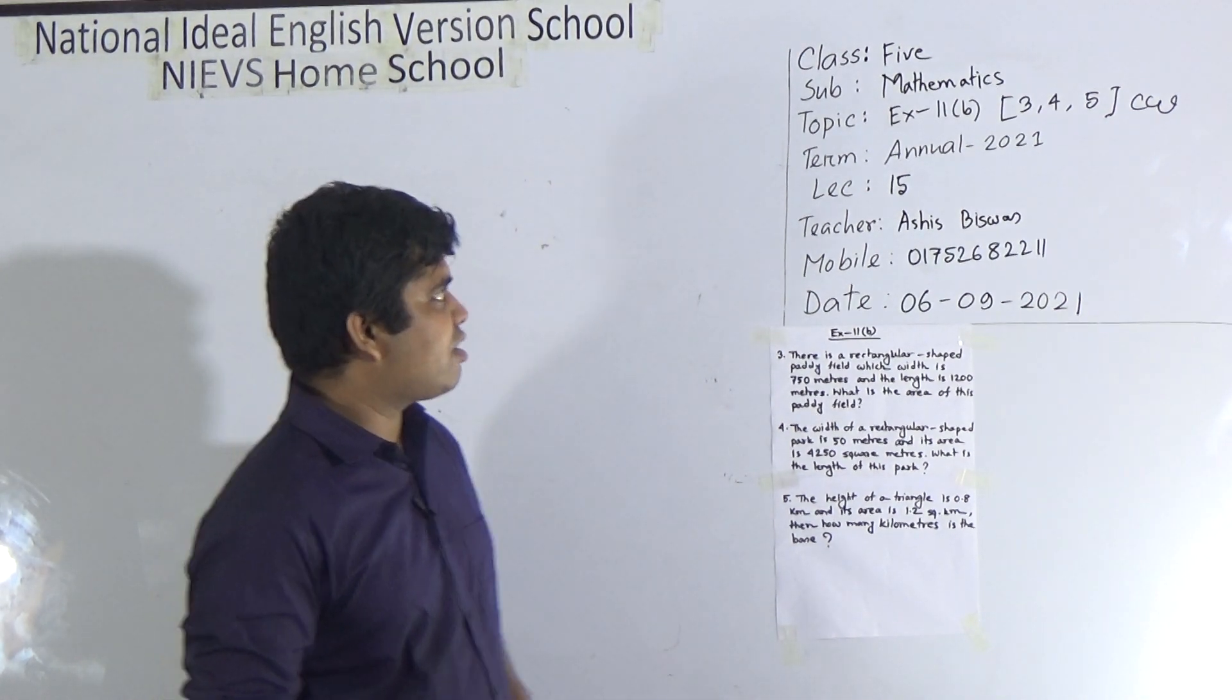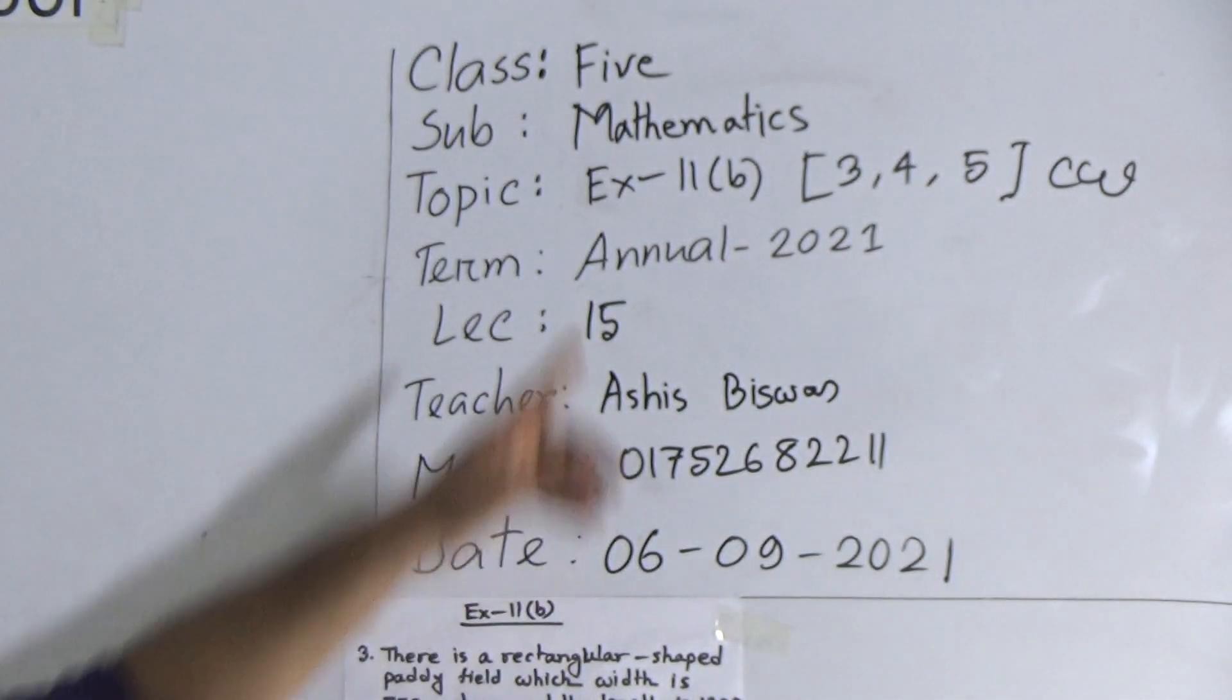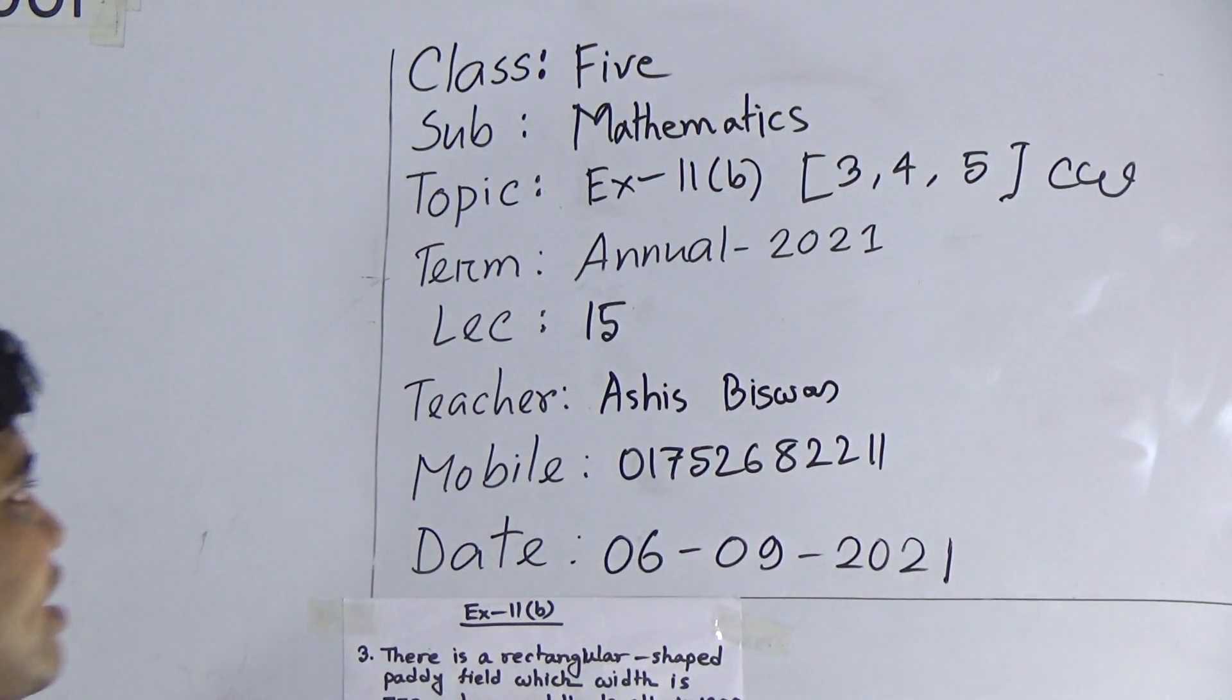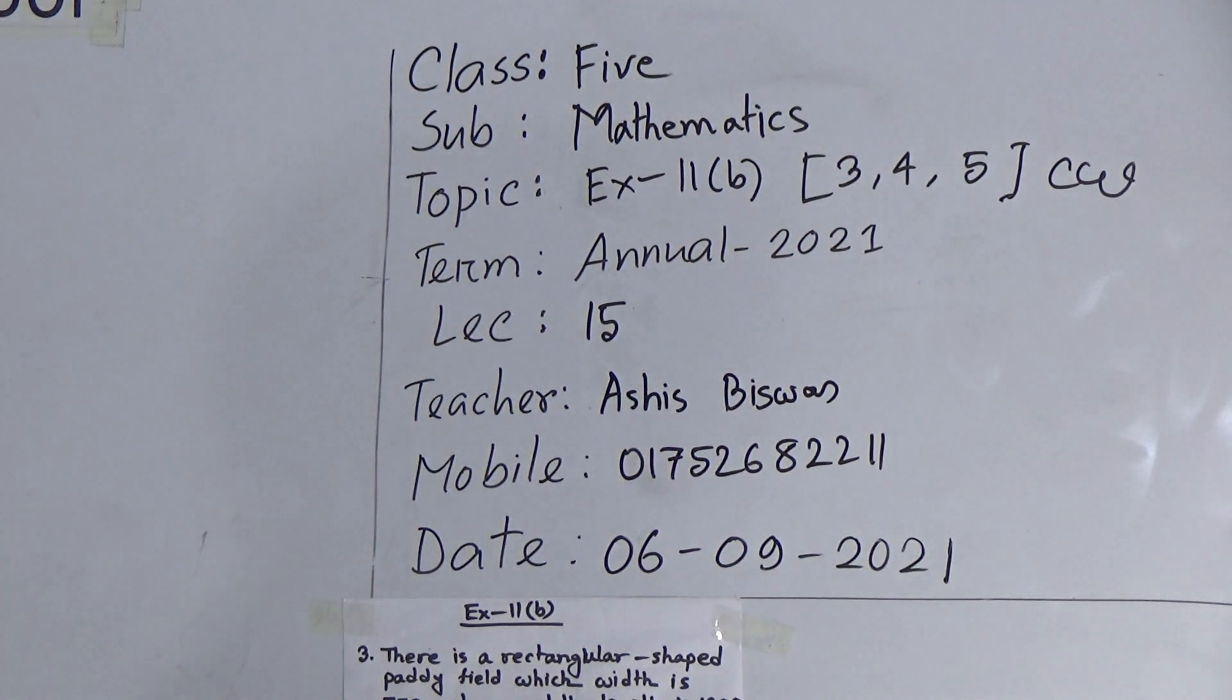Today is our lecture number 15 of Annual Time. Our today's topic is Exercise 11B. From Exercise 11B, we shall solve 3 odd problems: odd problem number 3, 4 and 5. This is your CWN. There is good news for you - there is no SWN today. So let us start our class.